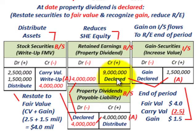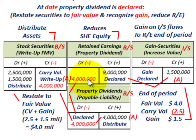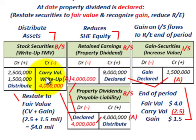The other entry at the declaration date: we reduce retained earnings and set up a property dividends payable at the fair market value of the securities — $4 million. We debit retained earnings for $4 million and credit property dividends payable for $4 million as a liability on the balance sheet. So at the declaration date, we've handled the write-up gain and set up the payable, crediting property dividends payable by $4 million and reducing retained earnings.